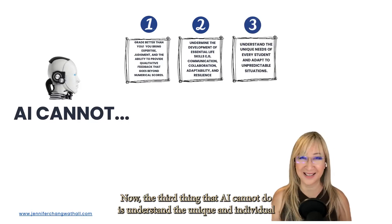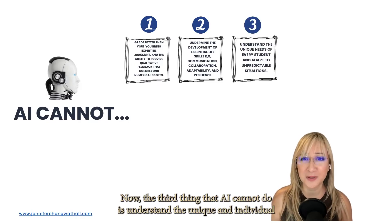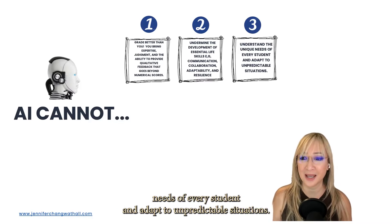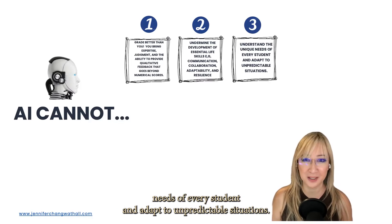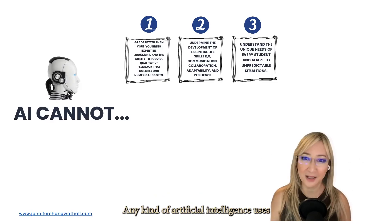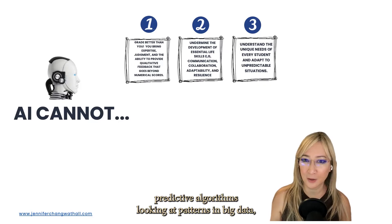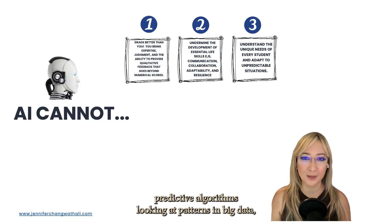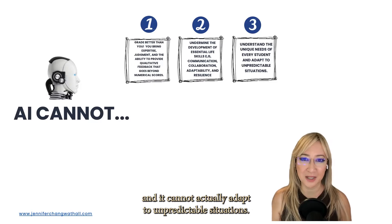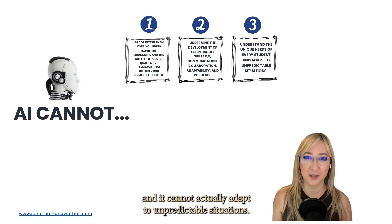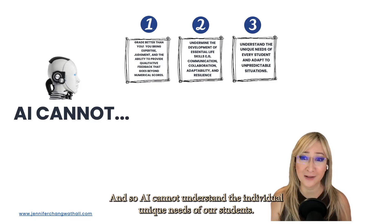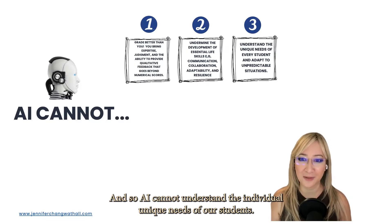The third thing that AI cannot do is understand the unique and individual needs of every student and adapt to unpredictable situations. Any kind of artificial intelligence uses predictive algorithms looking at patterns and big data, and it cannot actually adapt to unpredictable situations. So AI cannot understand the individual unique needs of our students.